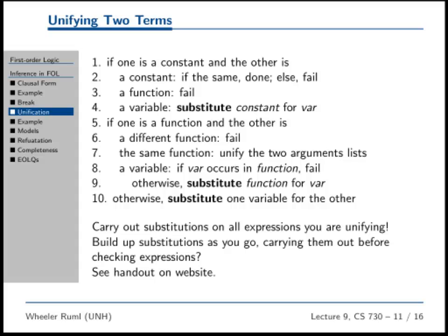Now we have a function and we're trying to unify it with something else. We know that something else isn't a constant because otherwise we would have been in line three. So now we have two functions. If they're the same function, then we can see if the argument lists unify. Otherwise, we have a variable.